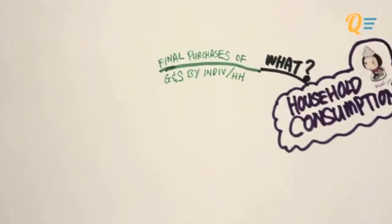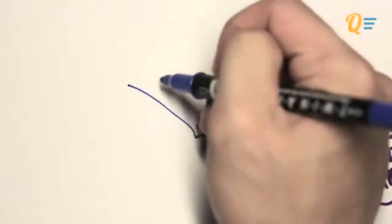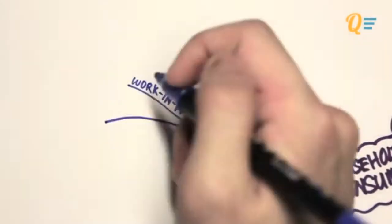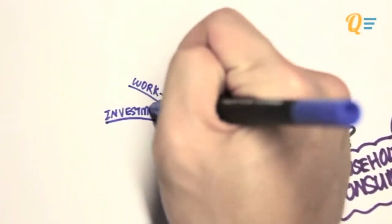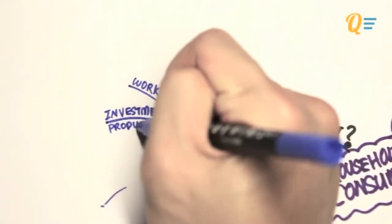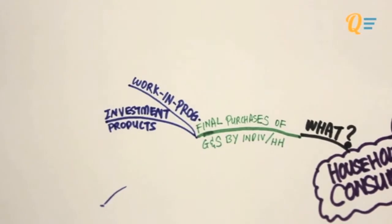Now, it does not include any of the three following. It does not include work-in-progress goods, which are maybe raw materials. It doesn't include investment products. And the next thing it doesn't include is imports.